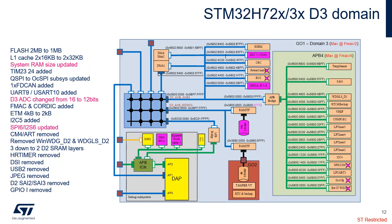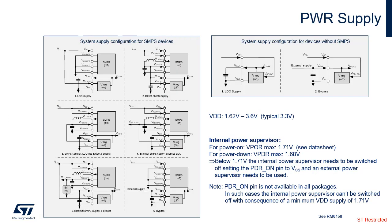In D3 domain, the 16-bit ADC has been replaced by a low-power 12-bit ADC. The SPI-6 now has an I2S feature included.